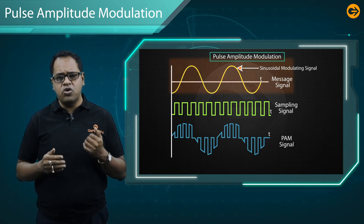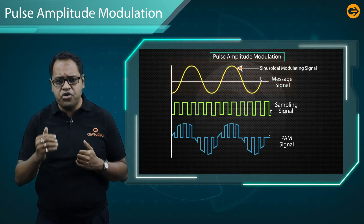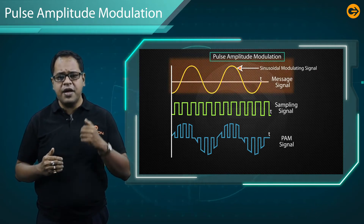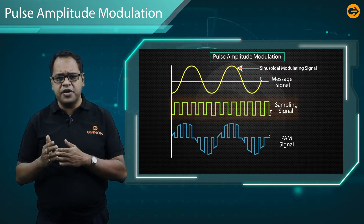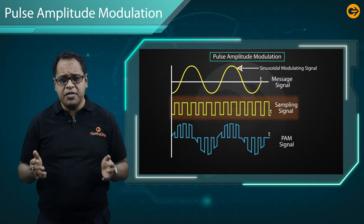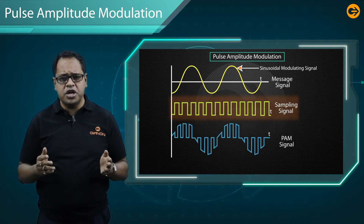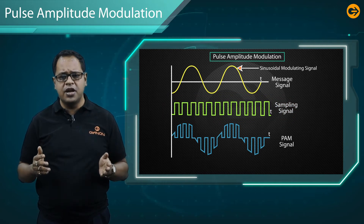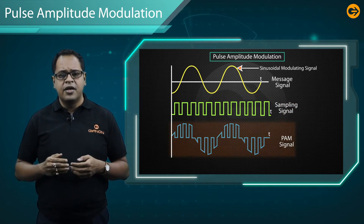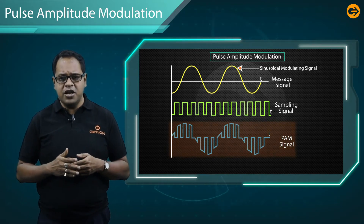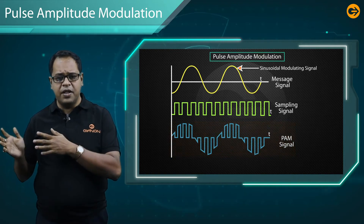Pulse Amplitude Modulation is a technique in which the amplitude of each pulse is controlled by the instantaneous amplitude of the modulating signal. It is a modulation system in which the signal is sampled at regular intervals and each sample is made proportional to the amplitude of the signal at the instant of sampling. This technique transmits data by encoding it in the amplitude of a series of signal pulses.